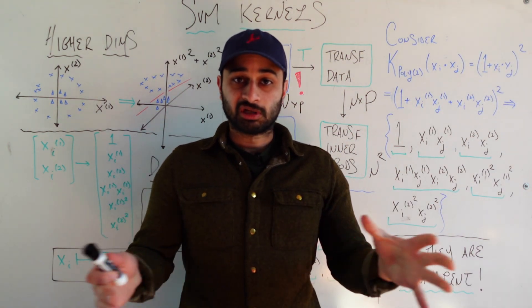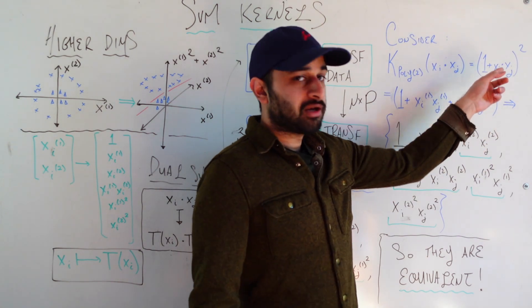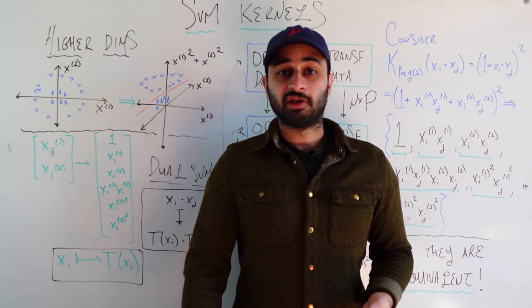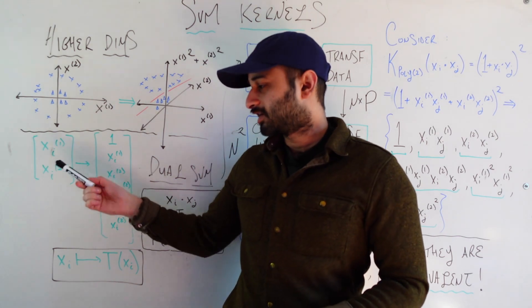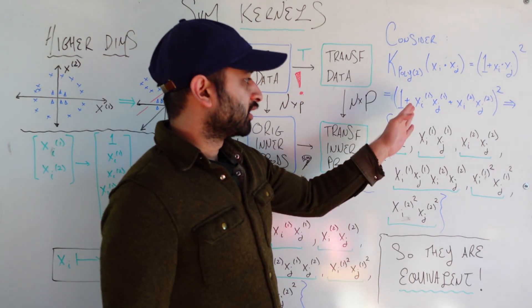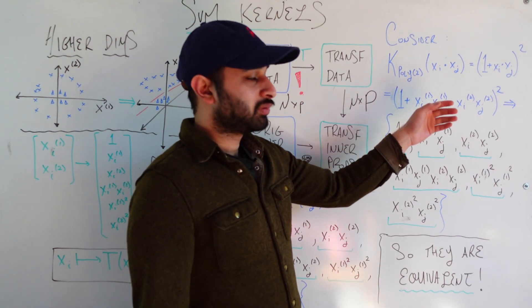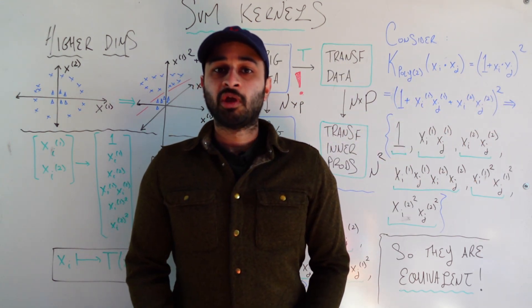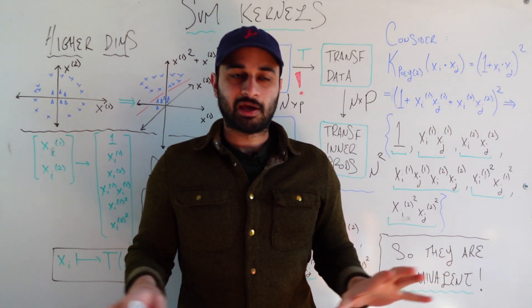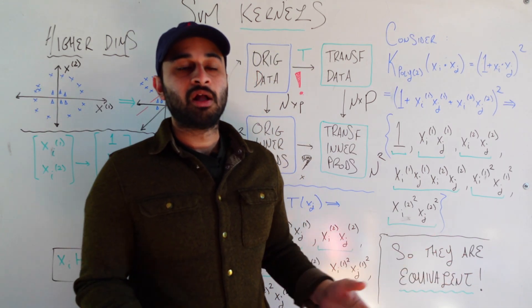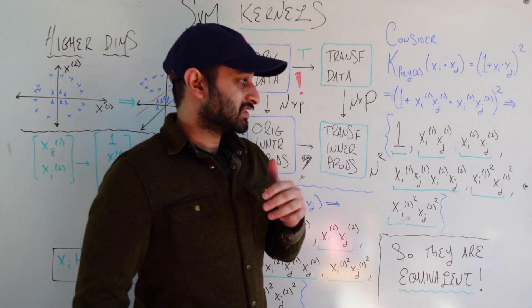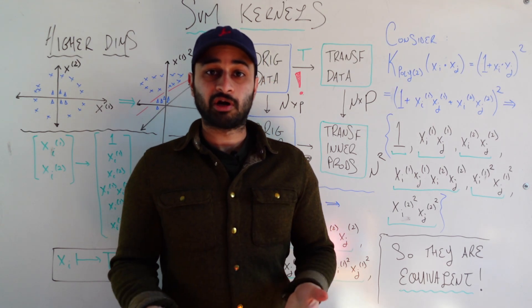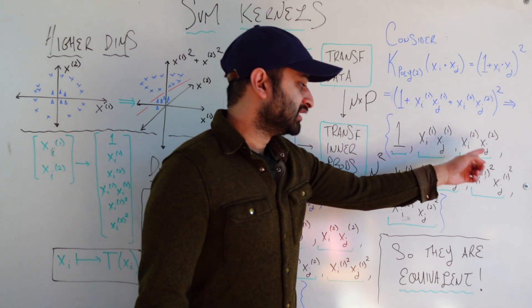This function is defined as 1 plus xi dot xj squared. And we can actually open that up just a little bit, because we know the form of xi dot xj. That would be taking a vector that looks like this, and taking the inner product of that with a vector that looks like this except with the j's. And that will give us xi1 xj1 plus xi2 xj2. And of course we're squaring that after adding that to 1. I won't actually do the algebra, but the main question we want to ask is, what are the unique terms that come out of doing this operation?